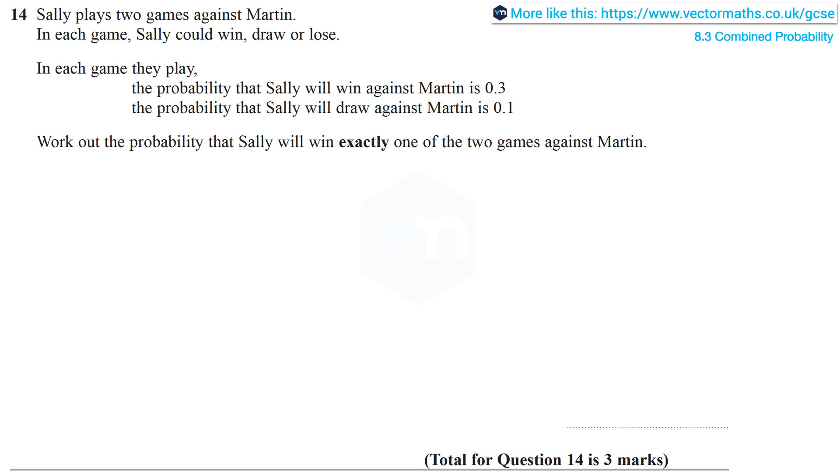In each game they play, the probability that Sally will win against Martin is 0.3, and the probability that she will draw against Martin is 0.1. We need to work out the probability that Sally will win exactly one of the two games against Martin.